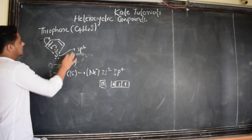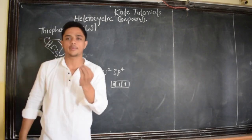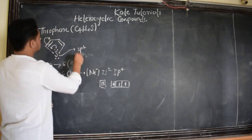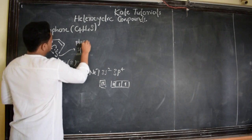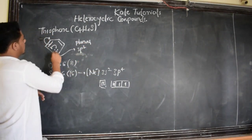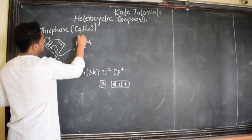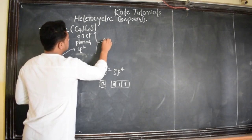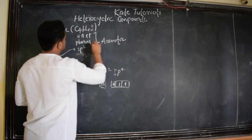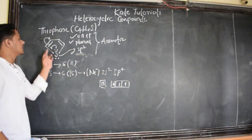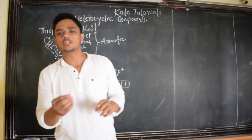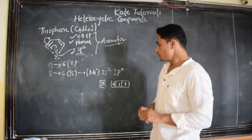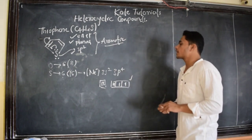Since all atoms are sp2 hybridized, they have a trigonal planar structure and lie in a single plane — so the molecule is planar. With 6 pi electrons it satisfies Hückel's rule (4n+2, n=1). It is planar, sp2 hybridized, has resonance, and there is conjugation — double bond, single bond, double bond. So thiophene is aromatic.